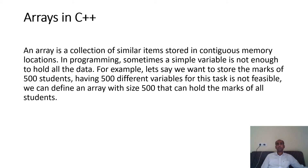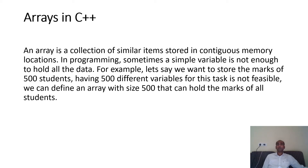An array is a collection of similar items stored in contiguous memory locations. If you create five separate variables, they will be allocated memory at different places in RAM, but an array allocates memory continuously. In programming, a simple variable is not enough to hold all the data — for example, storing marks of 500 students using 500 different variables is not feasible. We can define an array with a size of 500 instead.